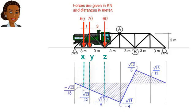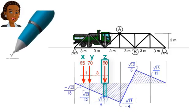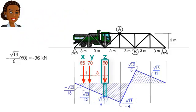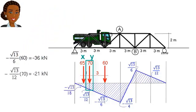But what if, instead of a unit load, we place a load of 60 kilonewtons at z? What would be the resulting axial force in AB? We can determine the resulting force by multiplying 60 by negative square root of 13 over 6. This gives us negative 36 kilonewtons. And what would be the resulting axial force if we placed a load of 70 kilonewtons at y? It would be negative 21 kilonewtons.